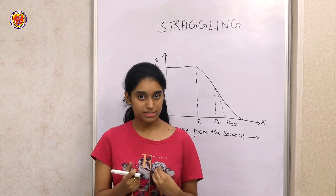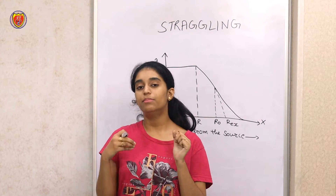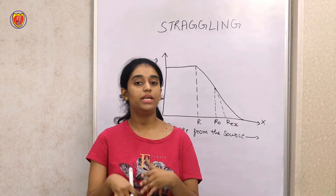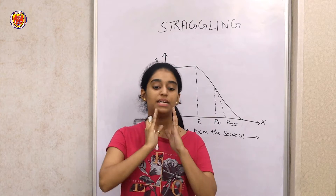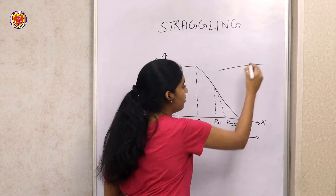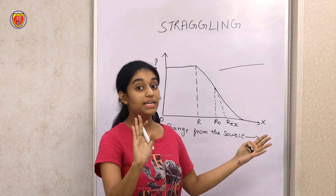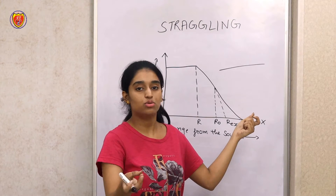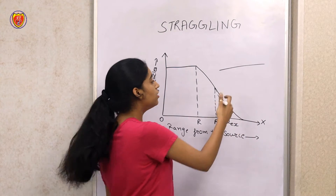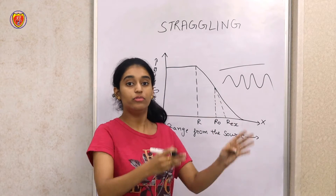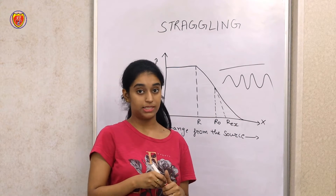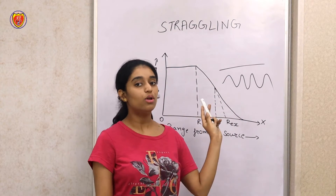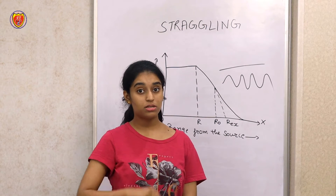Now let's talk about some facts. First of all, in the derivation of the range of heavy charged particles, we assumed that they follow a linear path. But in reality, they are not following a linear path — they move in a zigzag path. We did the derivation assuming a linear path, so the derived range value is not entirely accurate. A particle following a zigzag path covers a different range than one following a linear path.